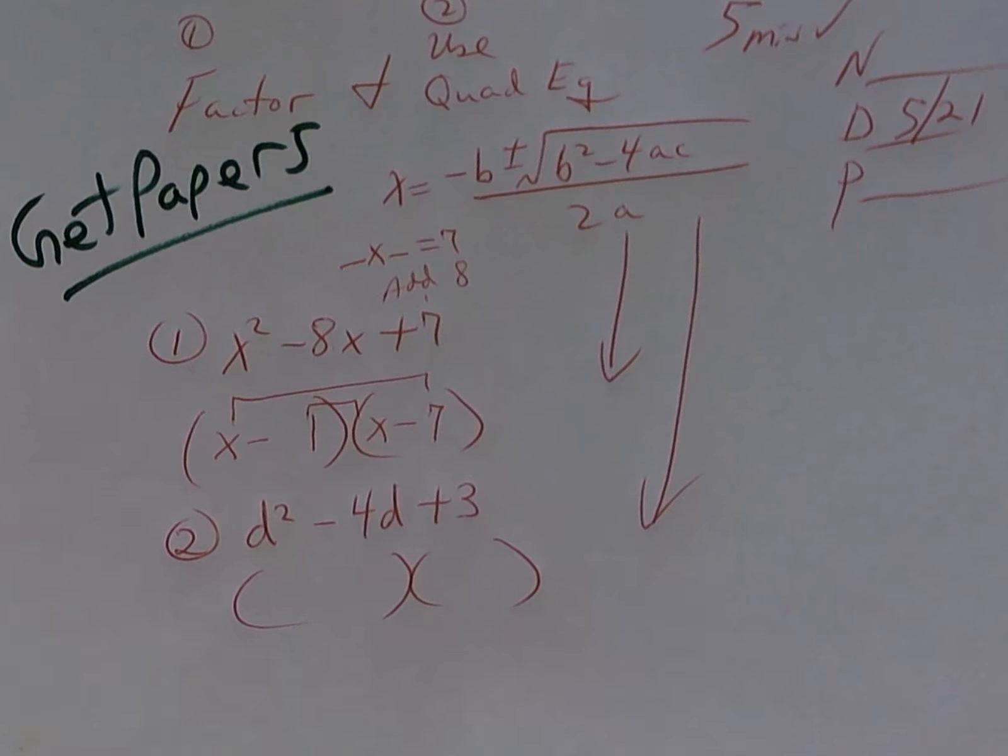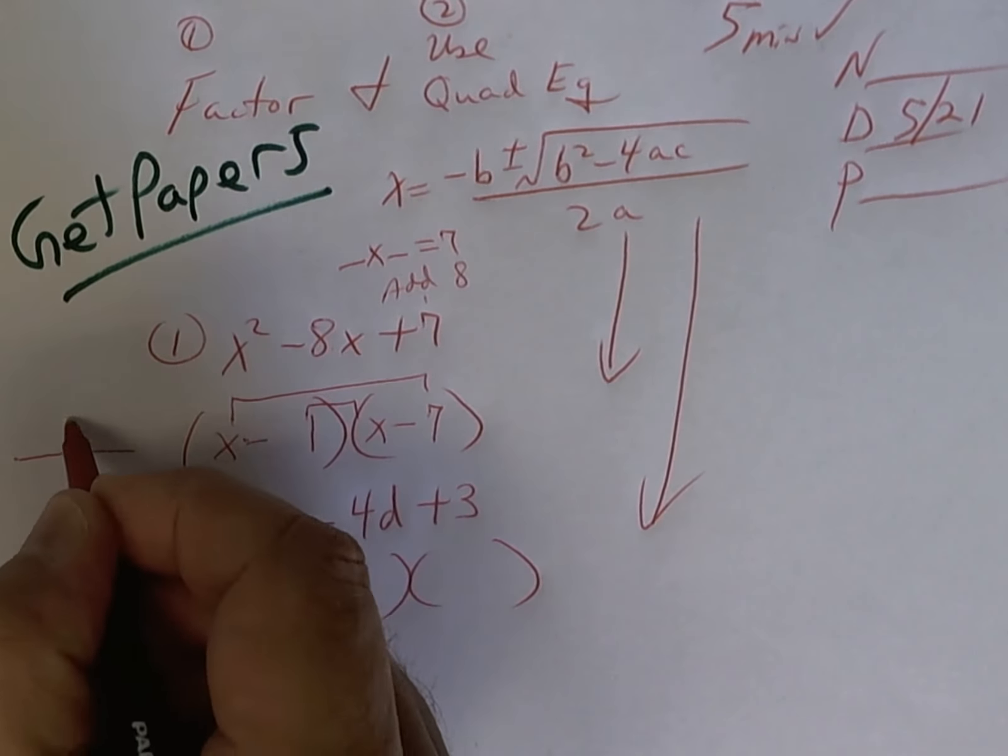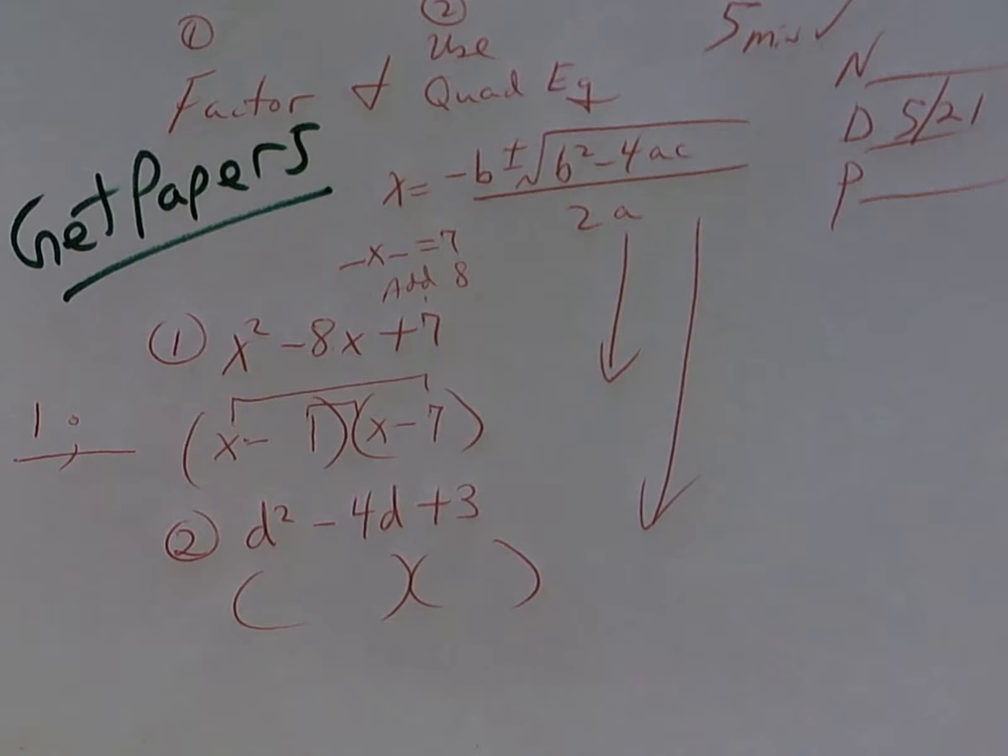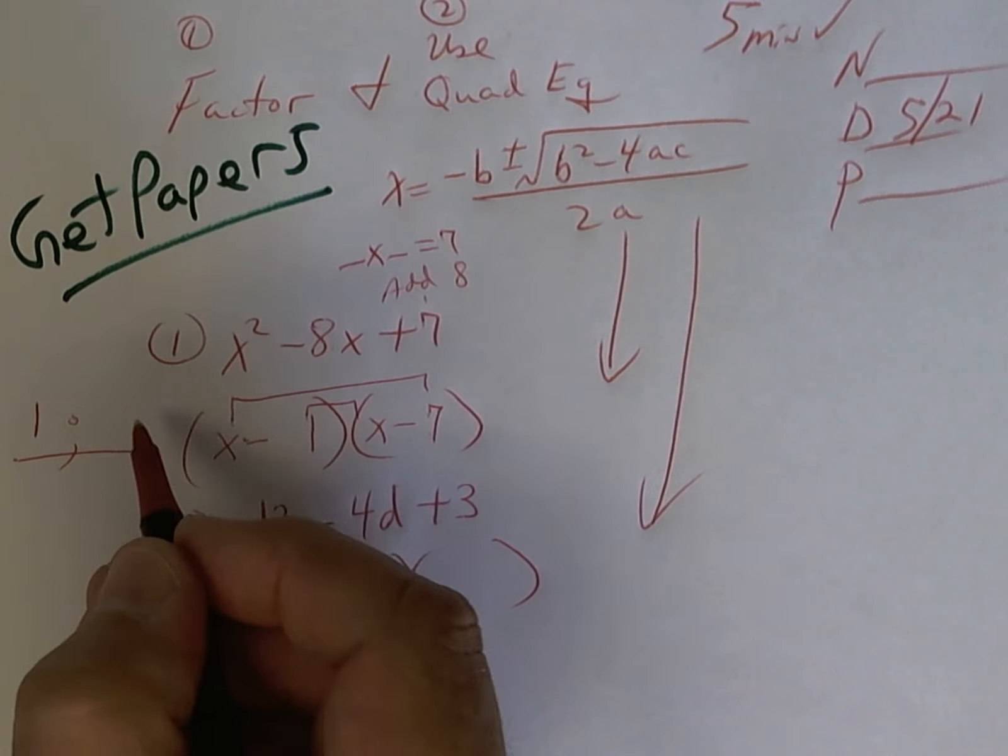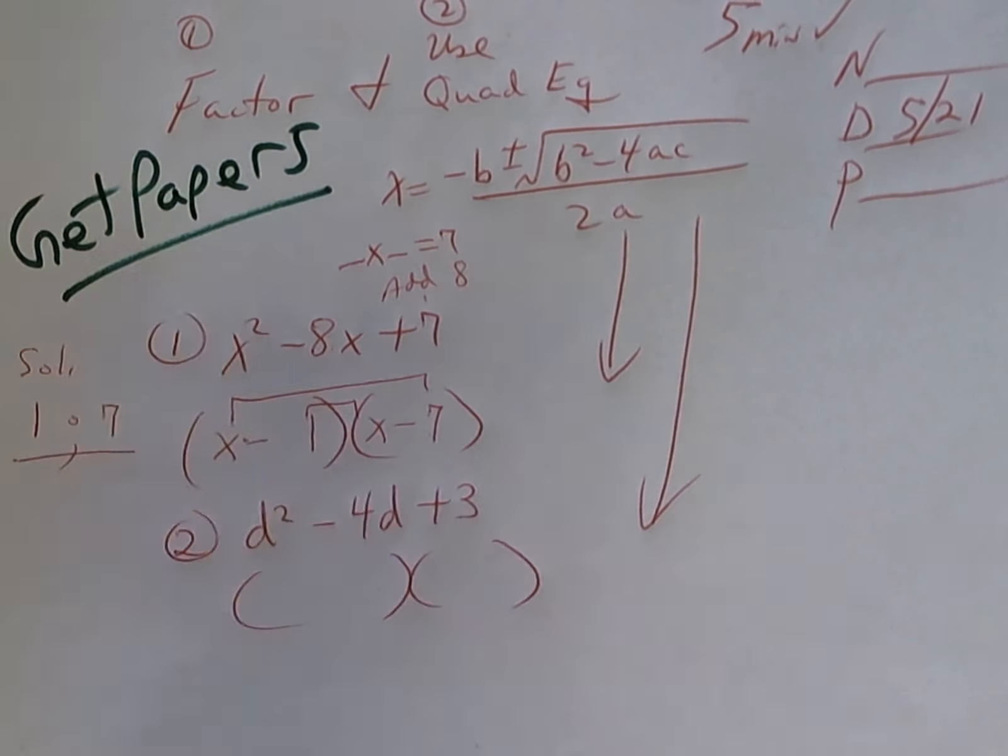Now, the opposite of a negative one is a plus one. The opposite of a negative seven is a plus seven. These are called your solutions or zeros. That's where the quadratic equation or the parabola hits the x-axis, x equals.